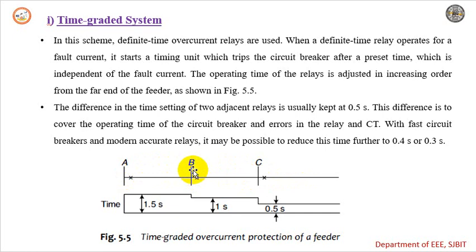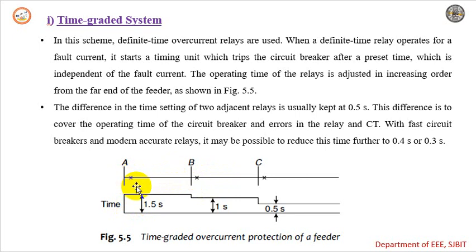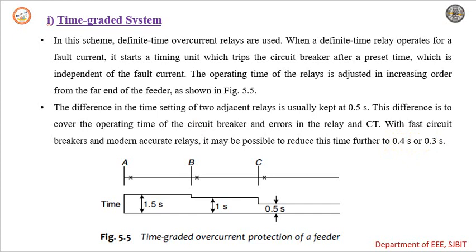If there is a fault between sections B and C, the circuit breaker at substation B should trip. If the relay at B fails to operate, then relay A will wait an extra 0.5 seconds and then operate. It may be possible to reduce this time difference — currently 0.5 seconds per section — to either 0.4 or 0.3 seconds. This is about the time graded system.